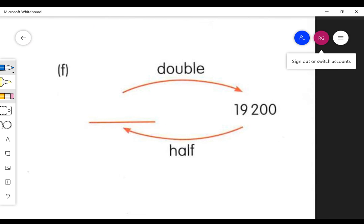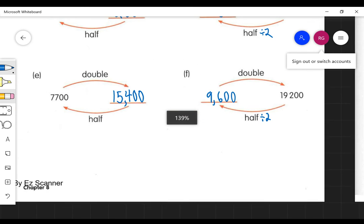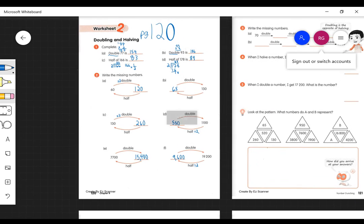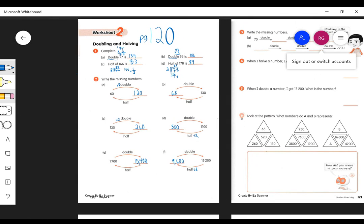The last one here is if we take half of 19,200, we should get 9,600. And again, that's if we divide by 2. So we could work those out. I'm sure you'll get that answer, but here are all of your answers for page 120.